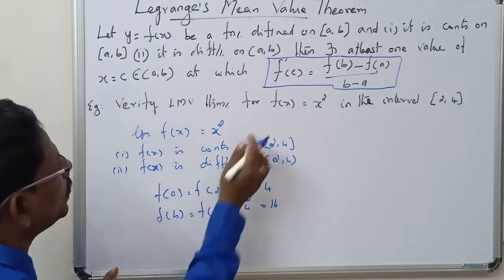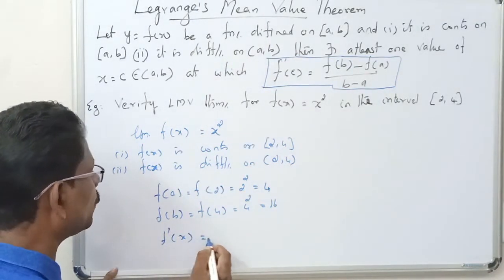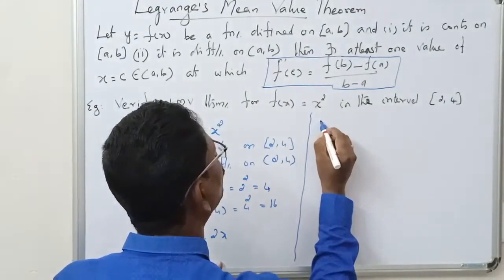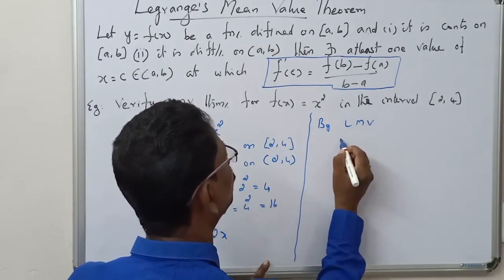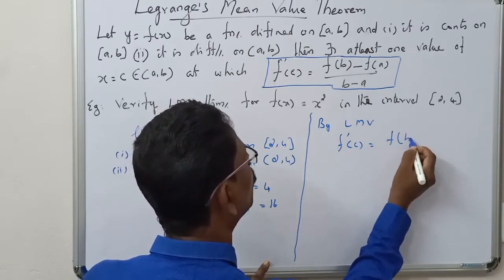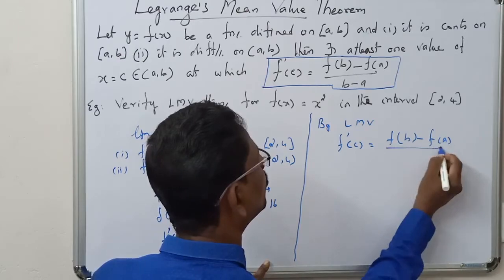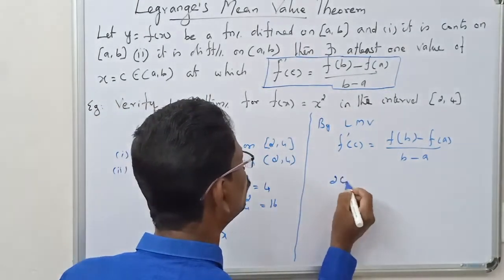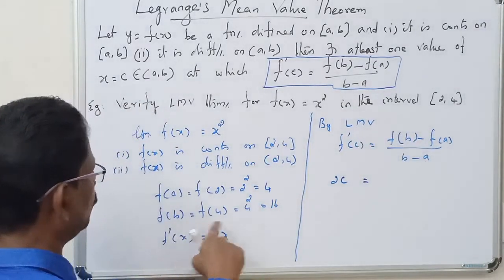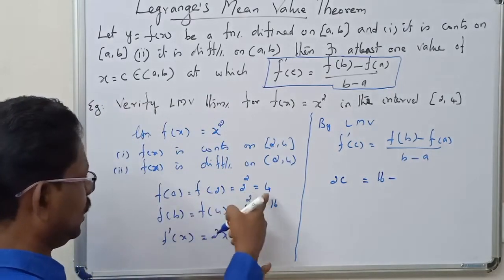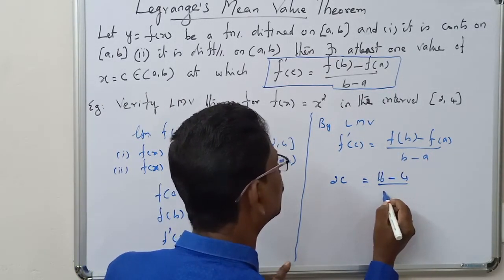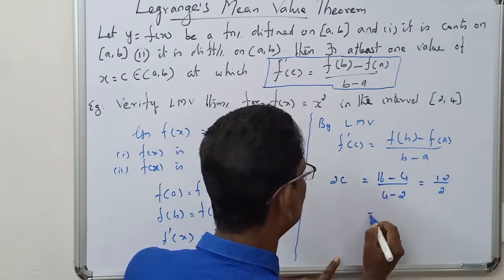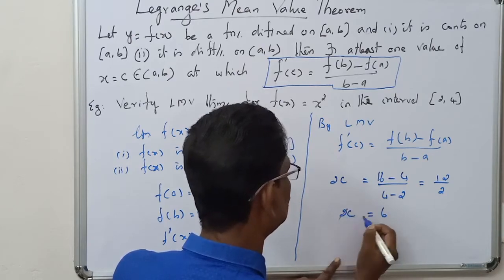We need f'(c). So f'(x) = derivative of x² = 2x. Therefore f'(c) = 2c. By Lagrange's mean value theorem, f'(c) = [f(b) - f(a)] / (b - a). So 2c = (16 - 4) / (4 - 2) = 12 / 2 = 6. Therefore 2c = 6, which gives c = 3.